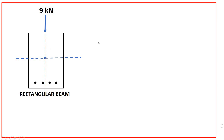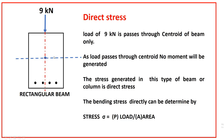No, we don't have any moment of this load — it is passing through the centroid only. So what about the stress? The stress is equal to the load of 9 kilonewtons divided by the area of this beam. The stress generated in this type of loading is direct stress, because we don't have any moment.